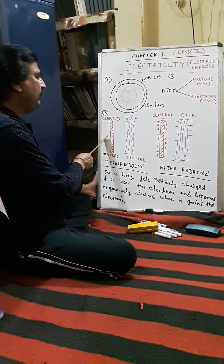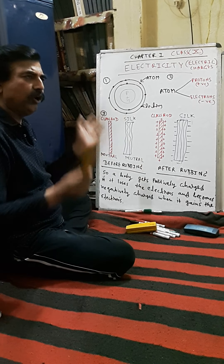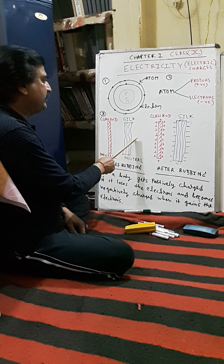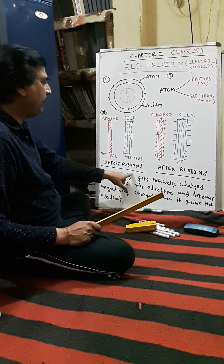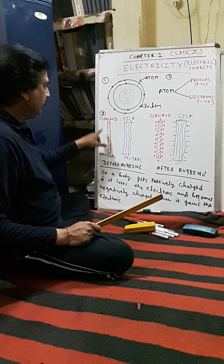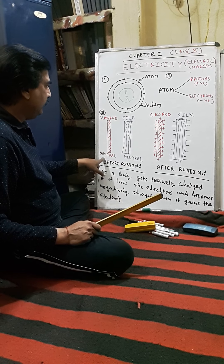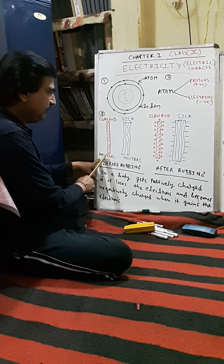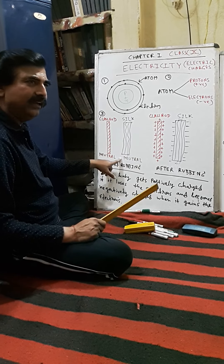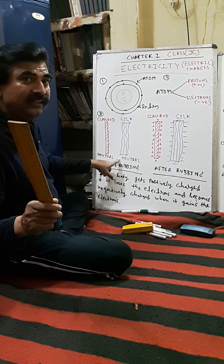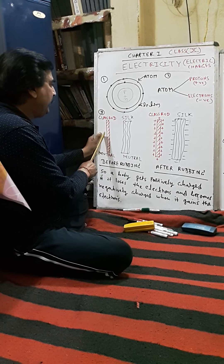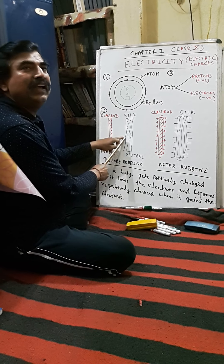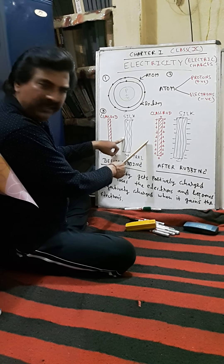Take a glass rod and a silk cloth. Now rub the glass rod with the silk. Before rubbing, this glass rod is neutral and this silk cloth is also neutral, because the number of electrons and protons are equal on the glass rod as well as on the silk cloth.